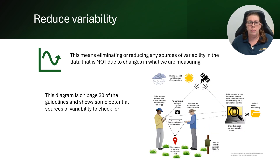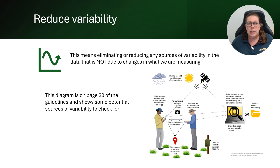Another aspect of achieving robustness is eliminating or reducing variability. Variability refers to variation in the data due to external factors. When we do our monitoring we want to make sure that any data we're recording is an accurate reflection of the condition or the change — not a reflection of who was doing the monitoring or the conditions under which it was done. For example, if two people are doing monitoring and they perceive things differently, one person might say canopy cover was 60 percent while the other might think it was 70 percent, and over multiple monitoring plots this difference could have a significant effect on the data.